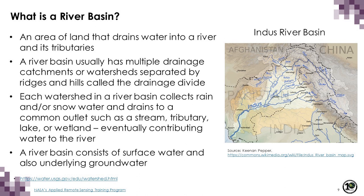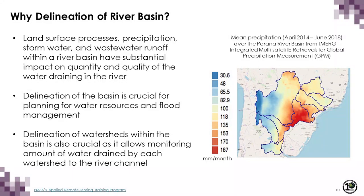A river basin consists not only of surface water but also underlying groundwater. Why delineate a river basin? Land surface processes — precipitation, stormwater, and wastewater runoff within a river basin — have substantial impact on the quantity and quality of water draining into the river. Delineation of the basin is crucial for planning water resources and flood management, and delineation of watersheds within the basin allows monitoring of the amount of water drained by each watershed to the river channel.